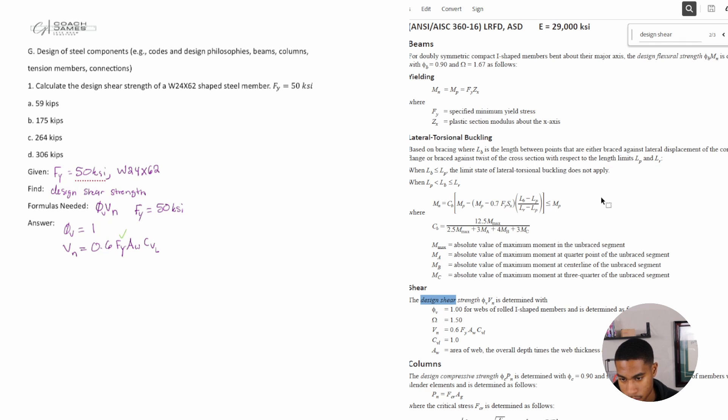What about Aw? Aw is the area of web, the overall depth times the web thickness. We don't have Aw yet, so Aw equals the depth times the web thickness, and that's going to be in inches squared. What about Cv1? Cv1 is equal to one.